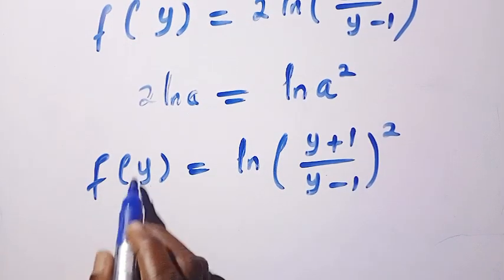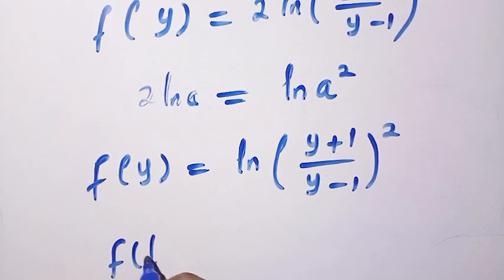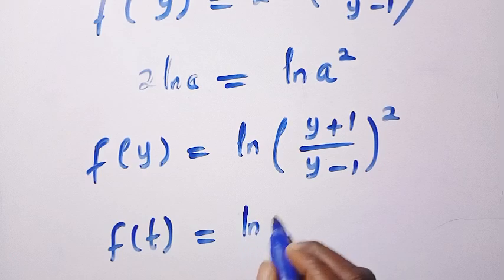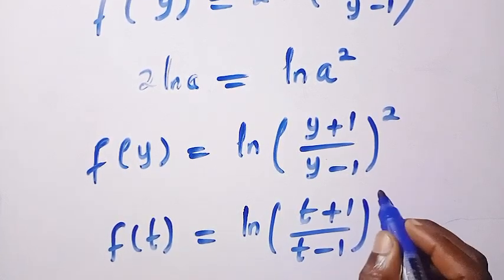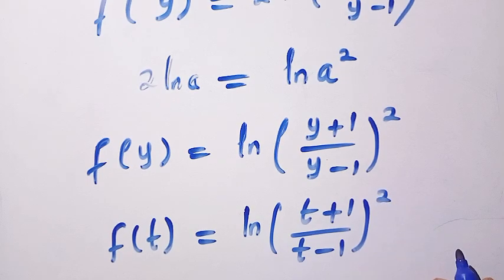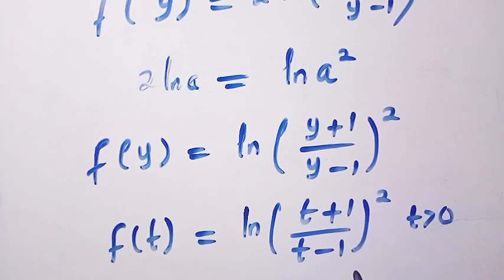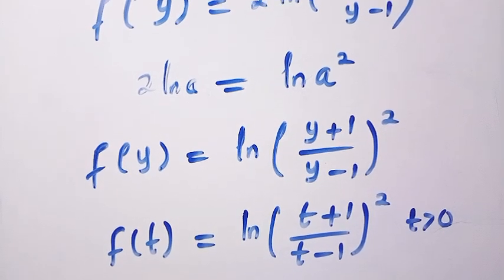By replacing y with t, we have f(t) = ln[((t + 1)/(t - 1))^2], and t is also greater than 0, so we don't have negative values. This is how we solve this. Thanks for watching and see you in the next video. Never stop learning. Bye-bye.